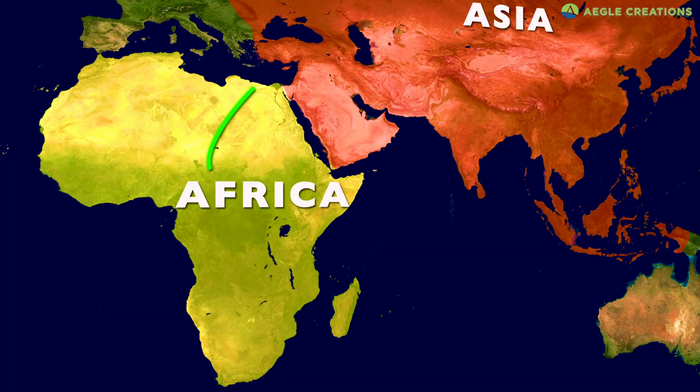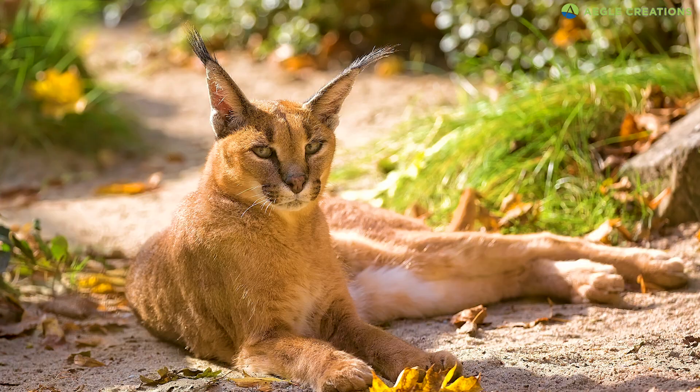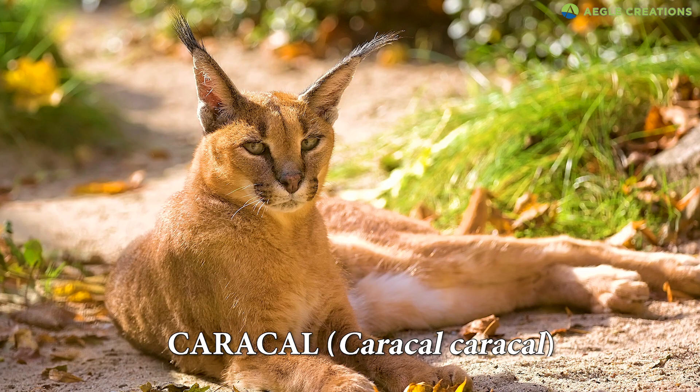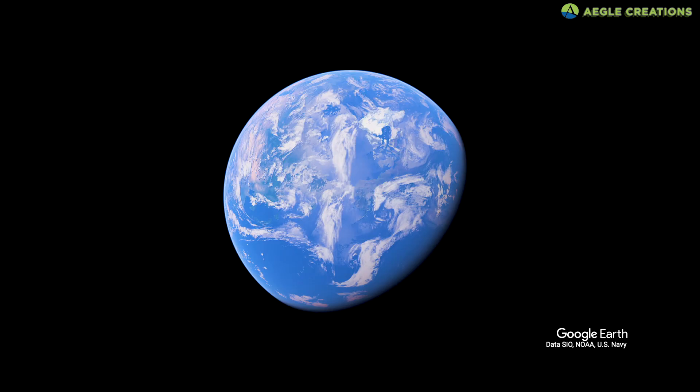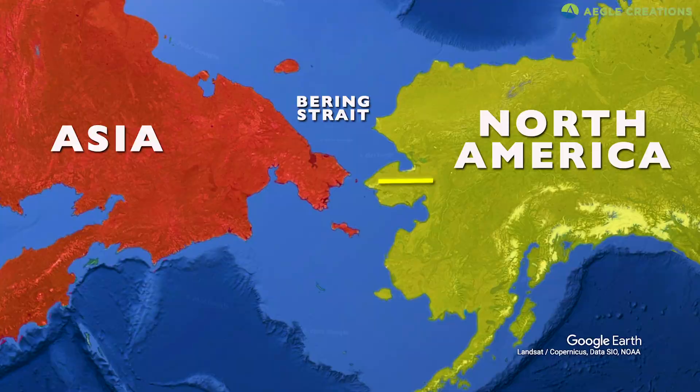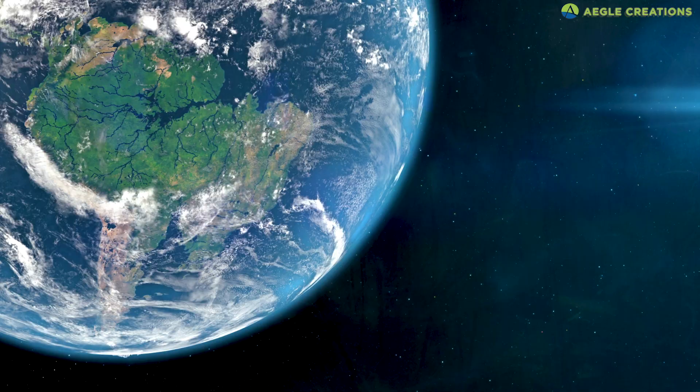This gave way to the caracal genus, forming African cats like the caracal. While Asian cats migrated to Africa, they also crossed the Bering Land Bridge to North America. As sea levels rose again, continents were separated and new species evolved.